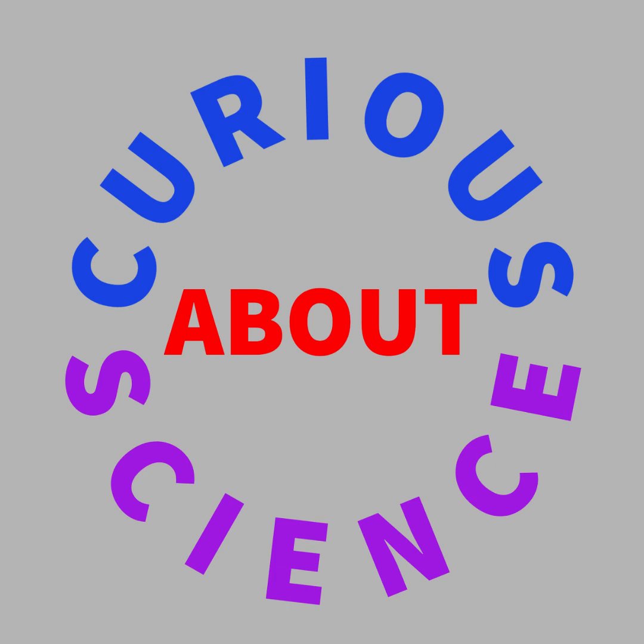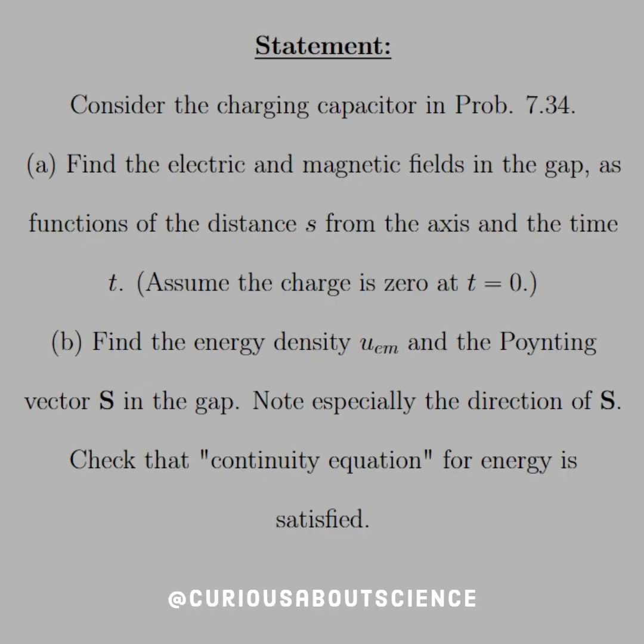Alright, let's dive on into our next one. The statement is, consider the charging capacitor in problem 7.34. Part A: Find the electric and magnetic fields in the gap, as functions of the distance S from the axis and time T, assuming the charge is 0 at T equals 0.